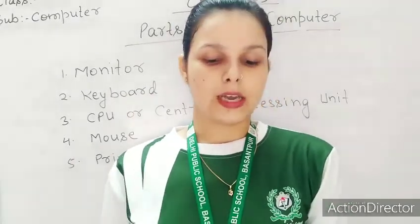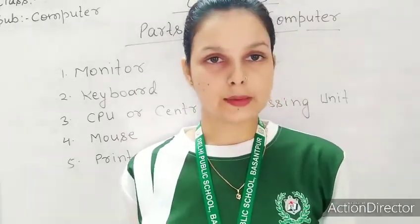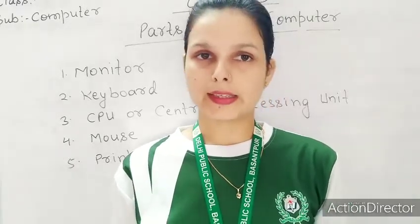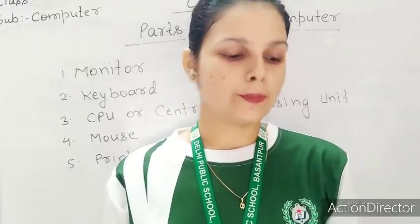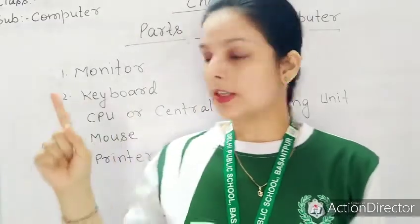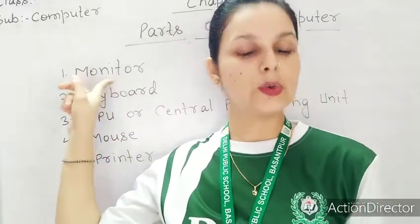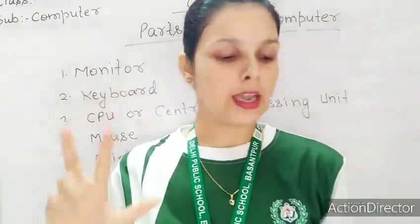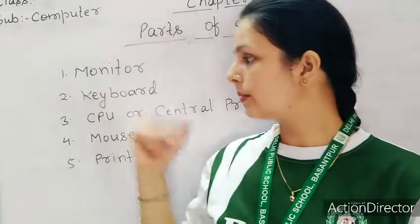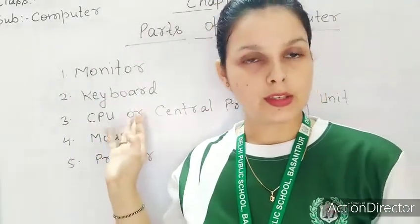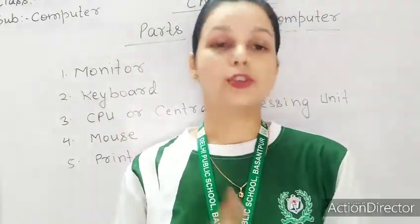So today we have covered the parts of the computer. We have studied some parts — there are also more parts that we will study in the next class. To recap: the monitor looks like a TV screen, it has a screen and we can see pictures, movies, alphabets, and numbers. We have also seen the keyboard and the CPU. The full form of CPU is Central Processing Unit — it is the brain of the computer and a very important part.